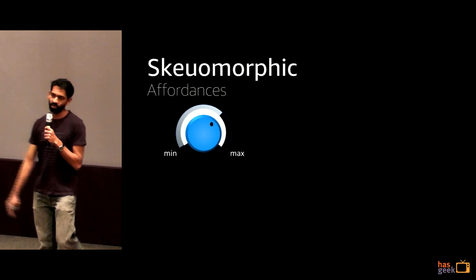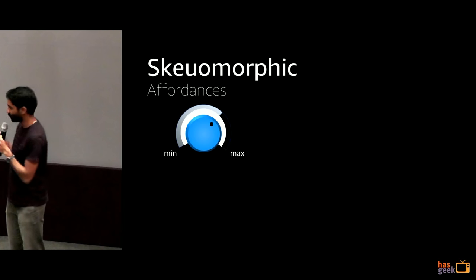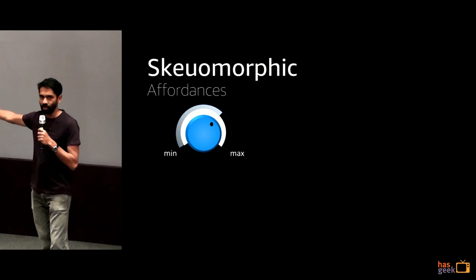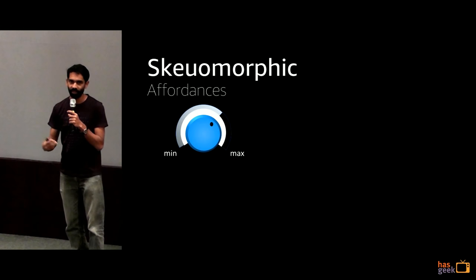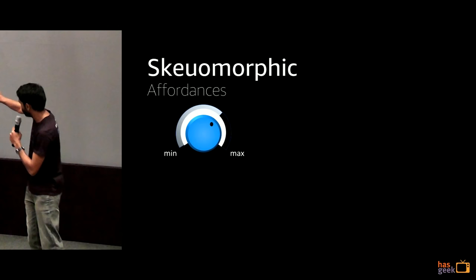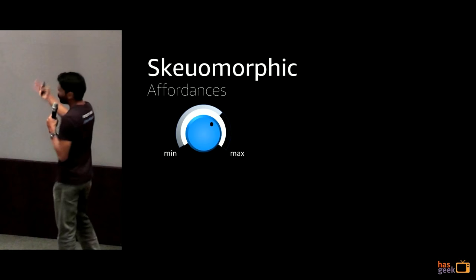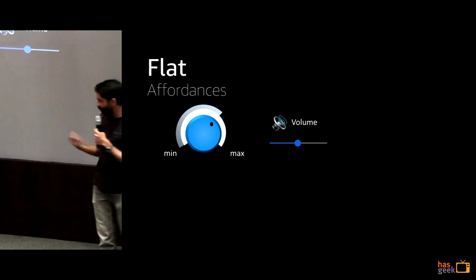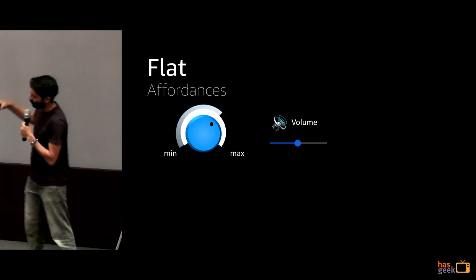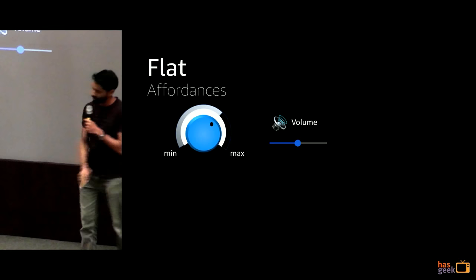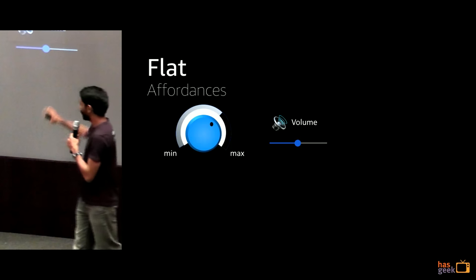On screen-based devices we evolved from skeuomorphism — modeling how things look in real life — to flat design. In the early days, a volume control looked like a real volume knob with a drop shadow and 3D feel, because that's how a volume knob looks in real life. When users got used to it, we moved to flat design in iOS, where designers said users know that sliding their finger across a bar will increase or decrease volume. That's the affordance — users know what to do.